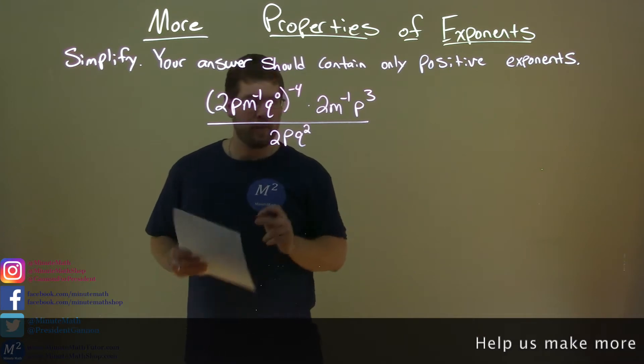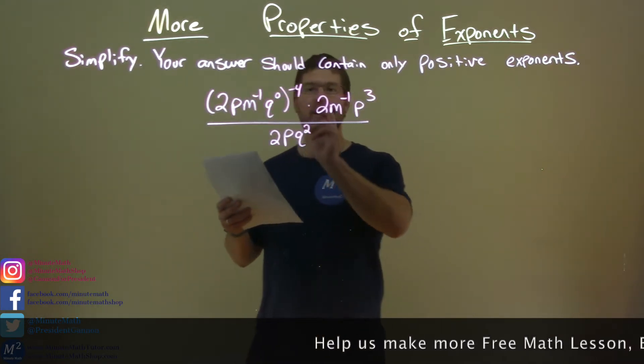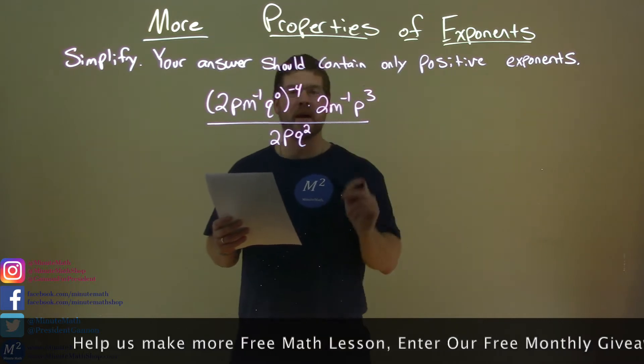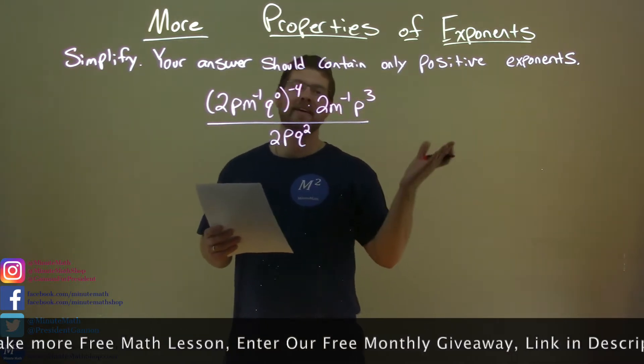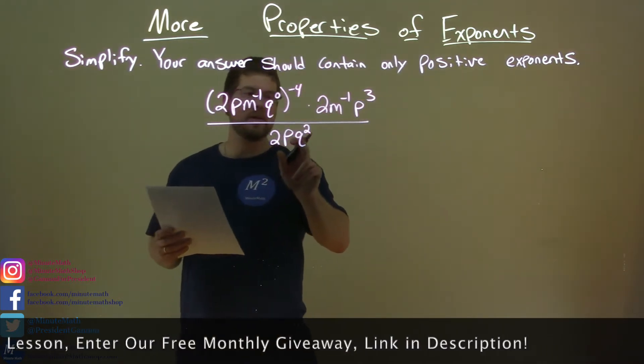2pm to the negative 1 power, q to the 0 power, all to the negative 4 power, times 2m to the negative 1, p to the 3rd power, divided by 2pq squared.